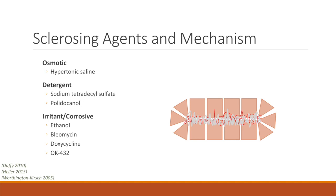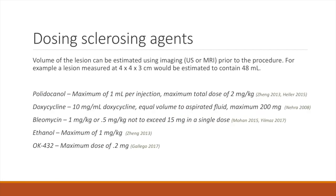Doxycycline is a relatively inexpensive tetracycline antibiotic. It has been extensively used for pleurodesis of malignant effusions as well as for the treatment of post-operative lymphoceles. OK-432 is a lyophilized solution with Streptococcus pyogenes particles that is thought to induce a lymphocyte inflammatory reaction.